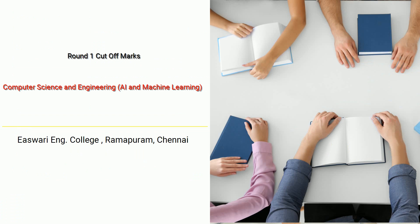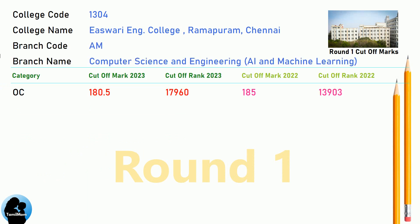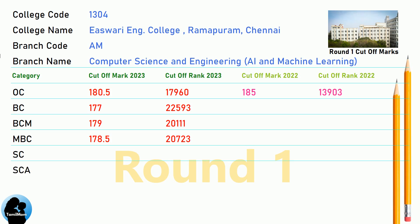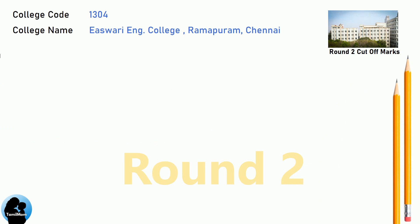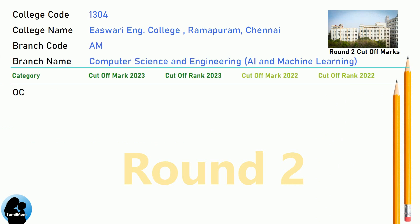DNA Round 1 Cut-Off for Eshwari Engineering College in Artificial Intelligence and Data Science. DNA Round 2 Cut-Off for Eshwari Engineering College in Computer Science and Engineering, AI and Machine Learning.